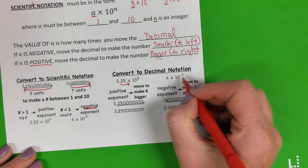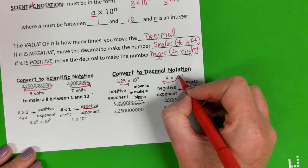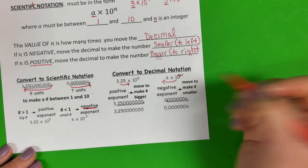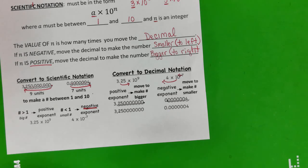And then if our exponent is negative, we want to make the number smaller. So the decimal goes this way. You can also think of your negative sign as an arrow. So 0.0004, okay?